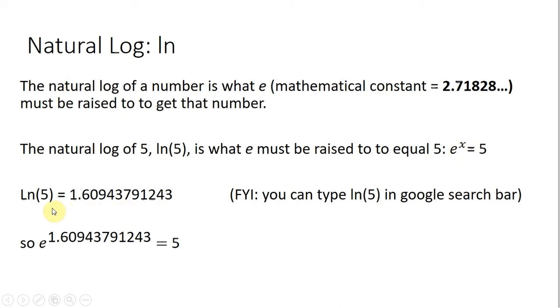So if we plug in the natural log of 5 into our scientific calculator, you could actually use the Google search bar to calculate it for convenience, you'll find that the natural log of 5 equals 1.609 something something. So in other words, if e were raised to that 1.609, it would equal 5. So that's the basic idea of a natural log.